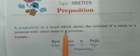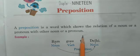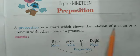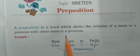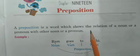A preposition is a word which shows the relation of a noun or a pronoun with another noun or a pronoun. In other words, a word or phrase that is used before a noun or pronoun to show place, time, or direction.